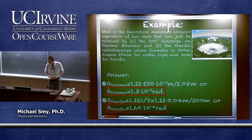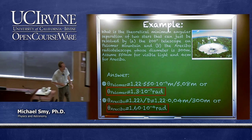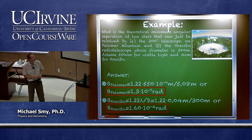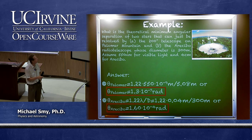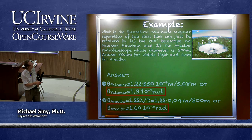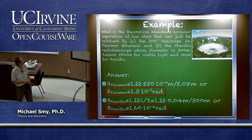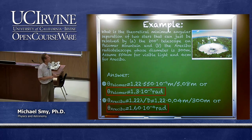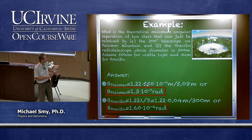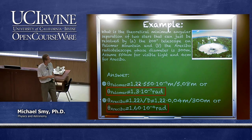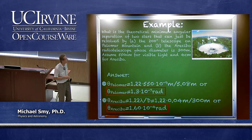Let's look at the Arecibo radio telescope in Puerto Rico — a dish 300 meters in diameter. We compare its resolution to the 200-inch Palomar telescope. Palomar's resolution is 1.22 × 550 nm / 5.08 m = 1.3 × 10⁻⁷ radians. Arecibo's shortest wavelength is 4 centimeters, giving 1.6 × 10⁻⁴ radians — much larger than the optical telescope's resolution limit.